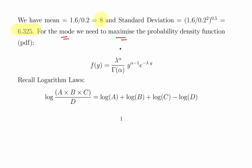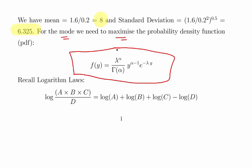Looking at the PDF in its raw form, where y is greater than 0, it is: lambda to the power of alpha over the gamma function of alpha, times y to the power of alpha minus 1, times e to the minus lambda y. It's an obviously complicated-looking expression.